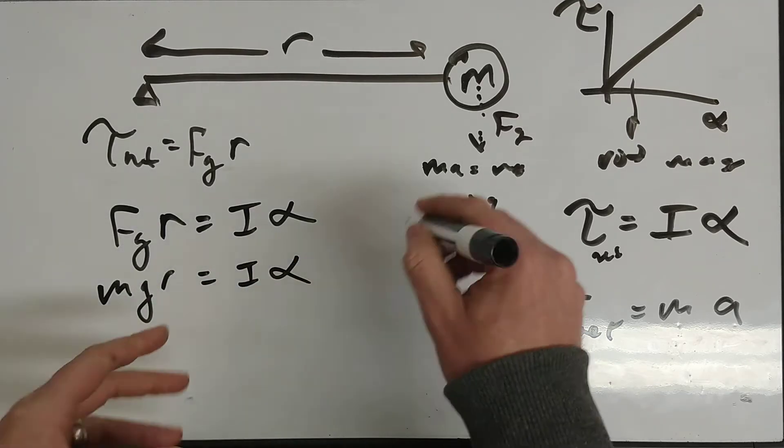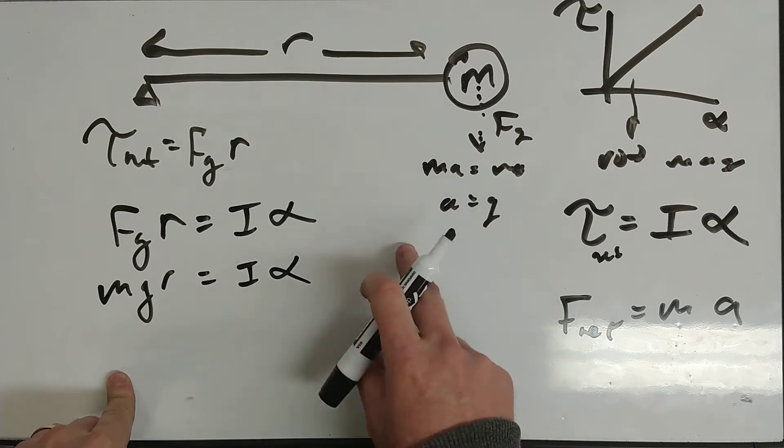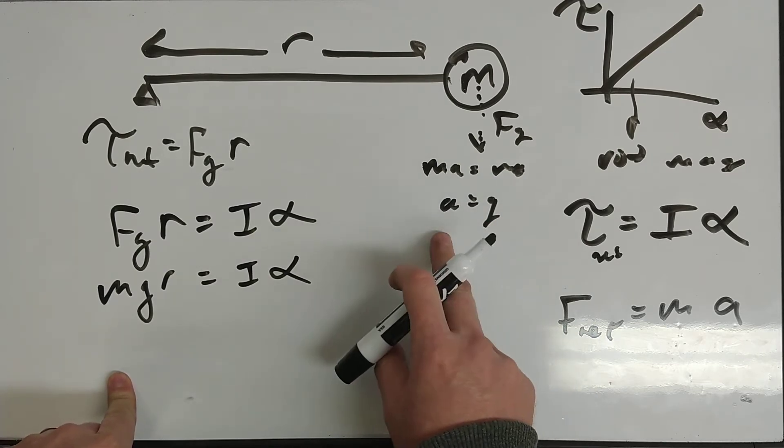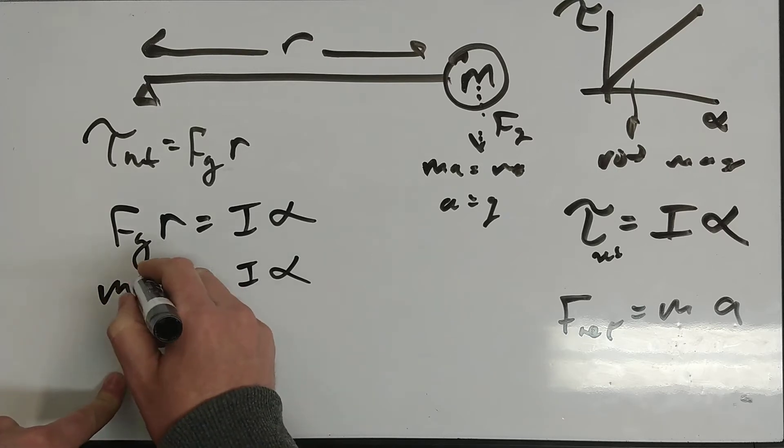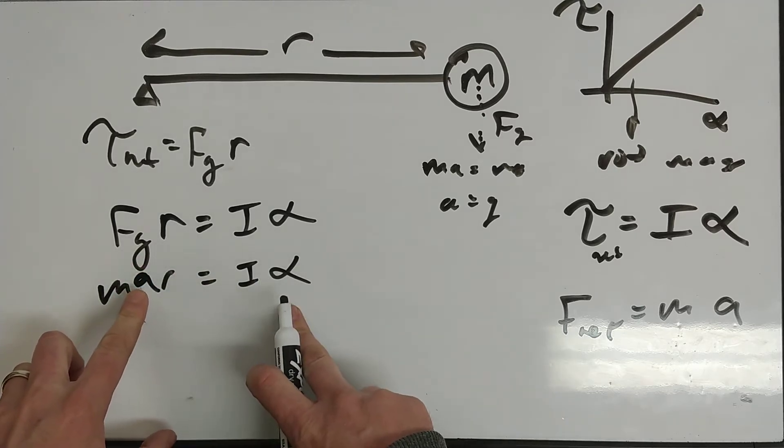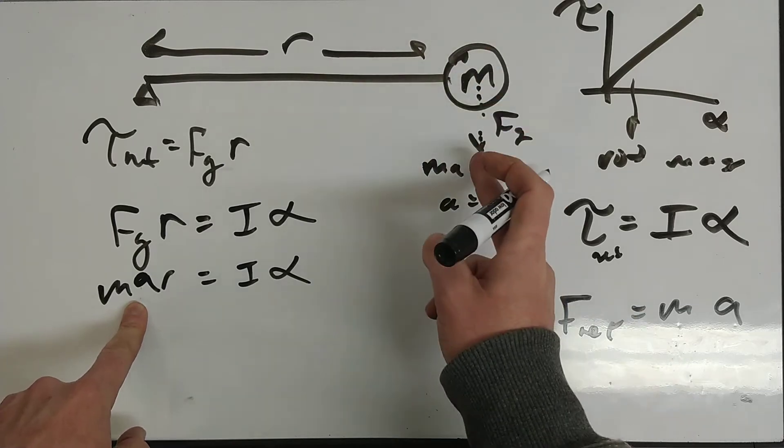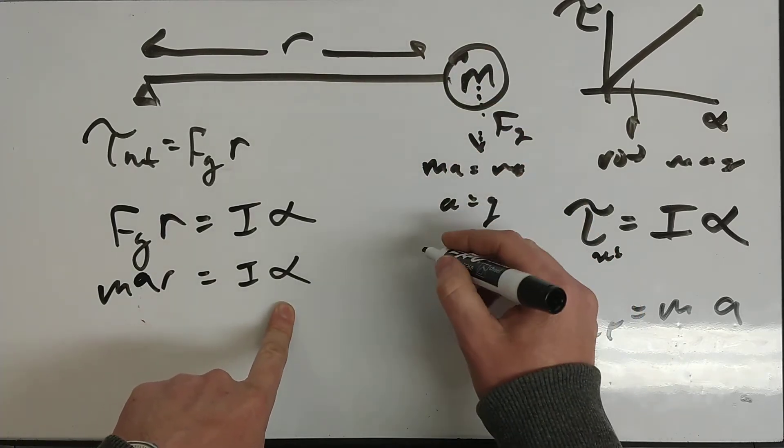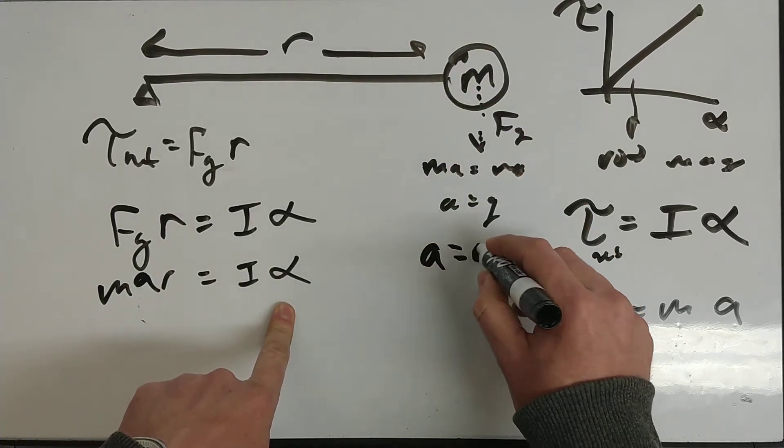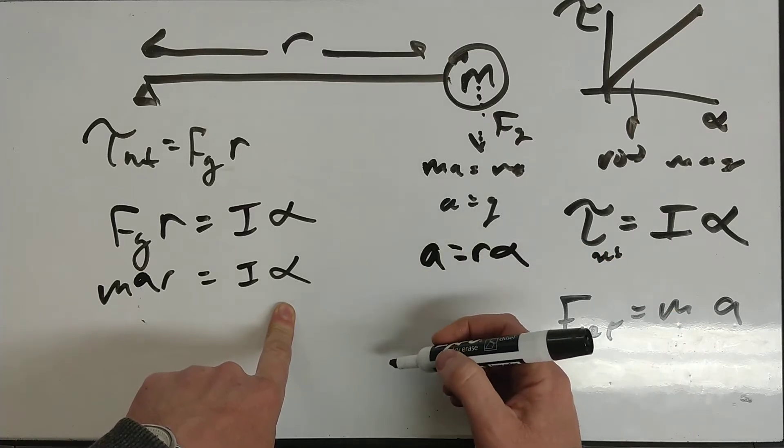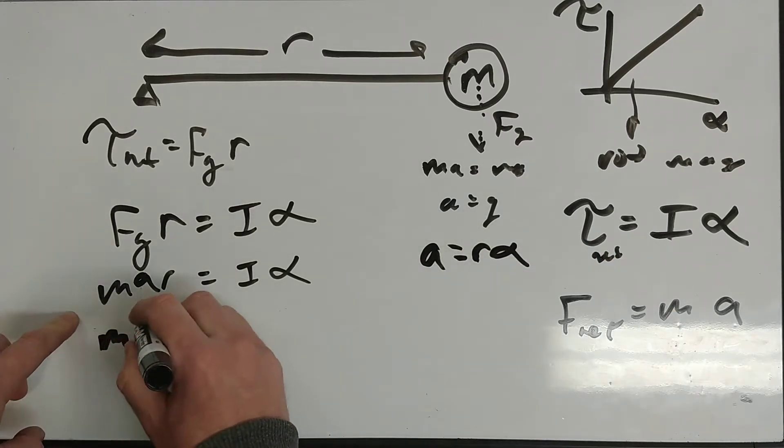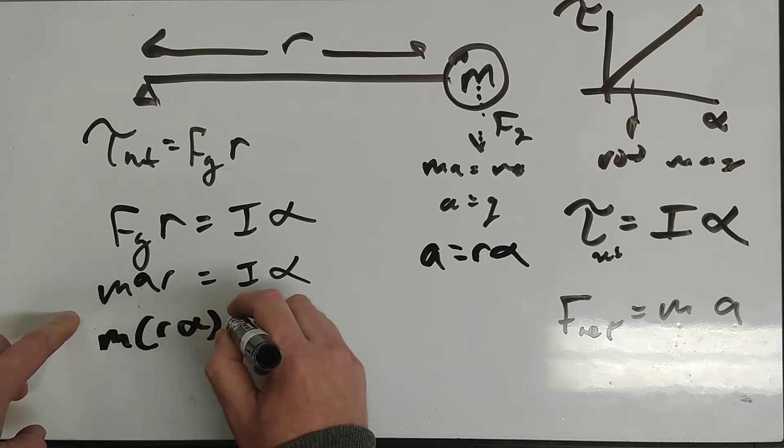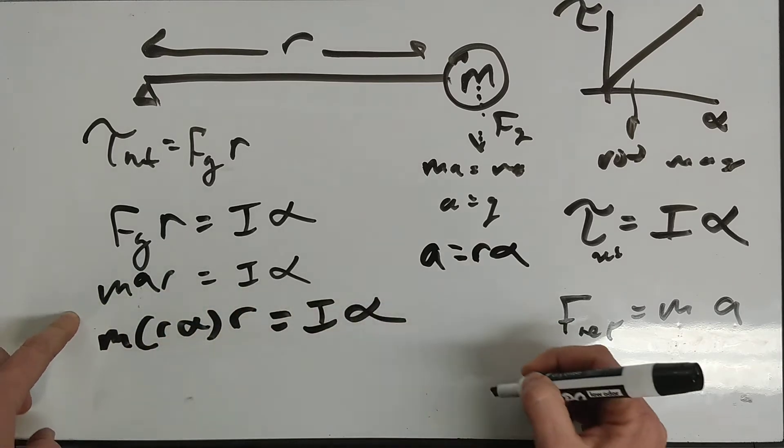Well, force of gravity is MG times R equals I alpha. Well, we said G, this is going to be a little bit of hand waving here. G is A. G is A. So I'm going to get rid of the G there, I'm going to call it A for now. And then the acceleration, the linear acceleration, the alpha are related, you might remember this, the linear acceleration is R alpha. So let's see here, I have M times R alpha times R equals I alpha.